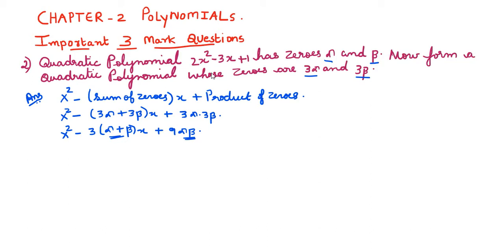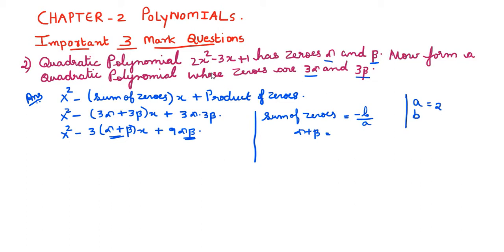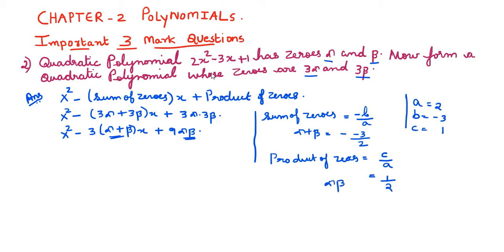Using the sum of zeros formula minus b by a: here a equals 2, b equals minus 3, and c equals 1. So alpha plus beta equals minus(minus 3) by 2, which is 3 by 2. The product of zeros c by a gives alpha times beta equals 1 by 2.